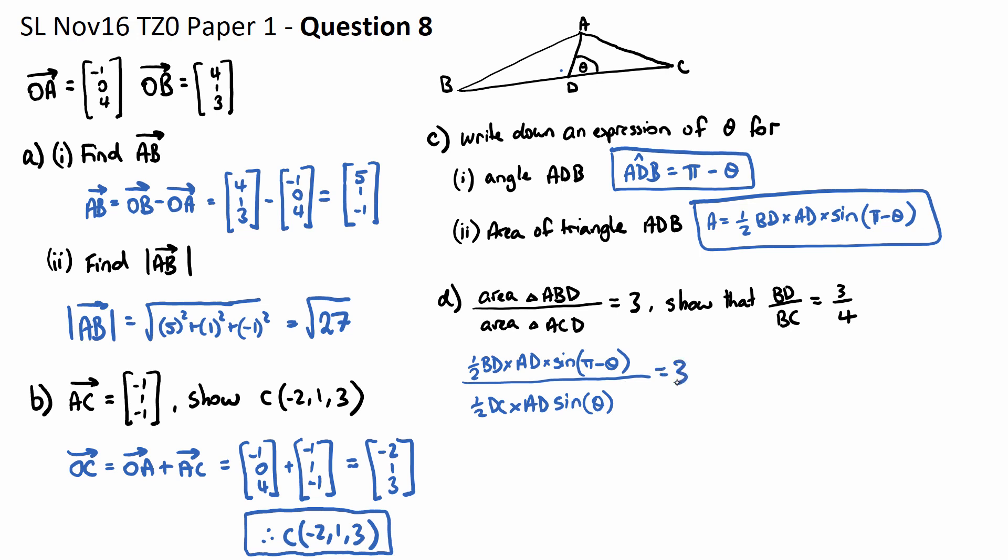Now this should be equal to 3. There's a few things we need to recognize here. We need to recognize that sine of pi minus theta is actually the same as sine theta.